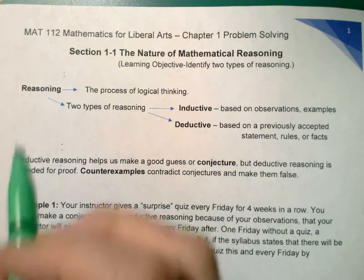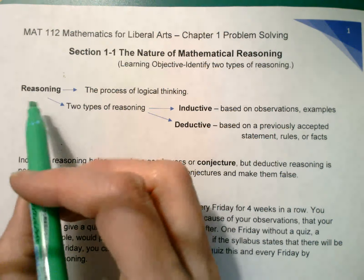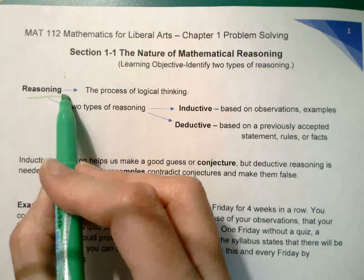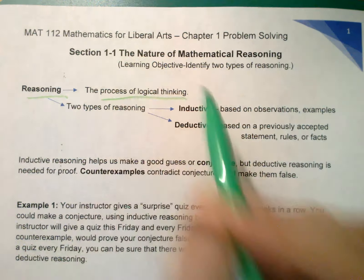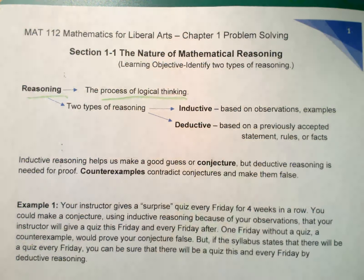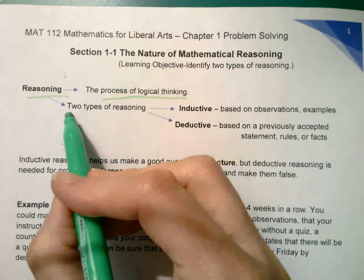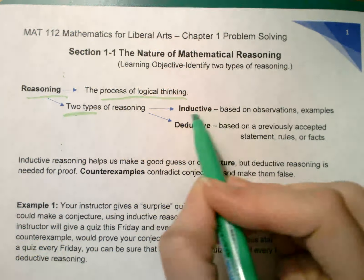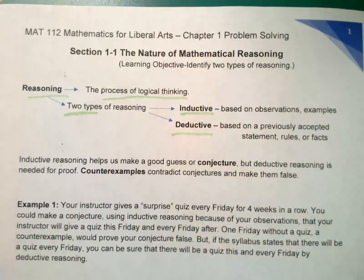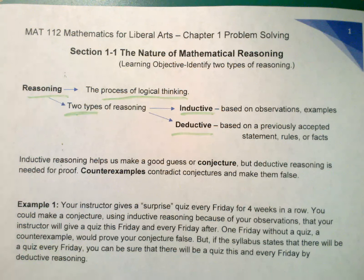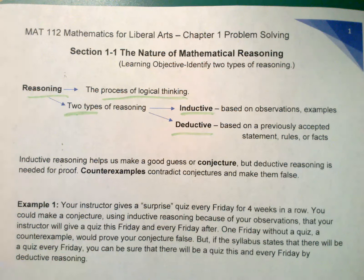Today we're going to identify two types of reasoning. Reasoning is your process of logical thinking. There are actually two types: inductive and deductive. We've probably heard the word deductive before. Deductive is based on previously accepted statements, rules, or fact. We want to keep those definitions fresh in our mind.